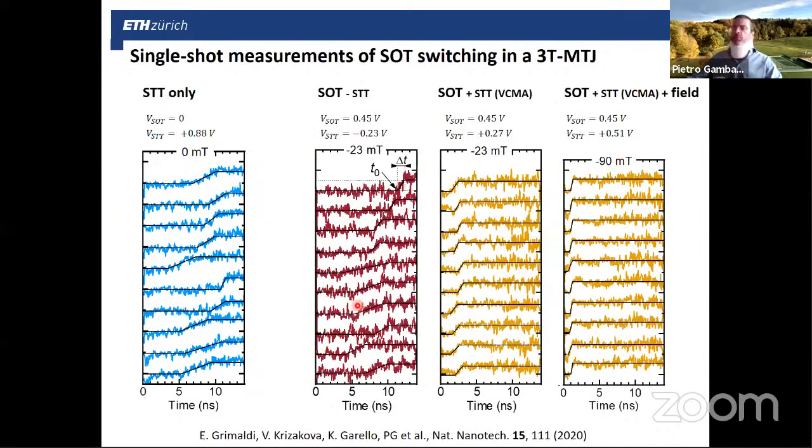For STT, we observe a larger voltage threshold, but also the fact that beyond—so below a certain pulse length—the junctions do not switch anymore. We believe this is due to back-hopping. So basically, we cannot achieve reliable switching using pulses shorter than five nanoseconds. Here you see the TMR levels during this measurement.